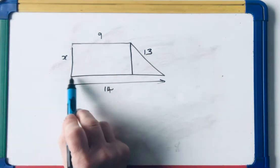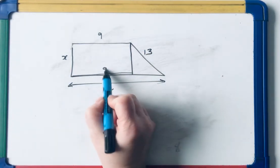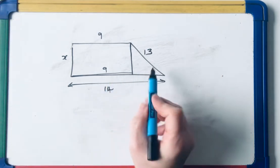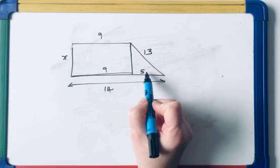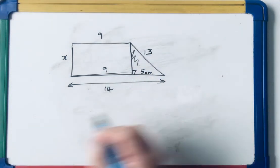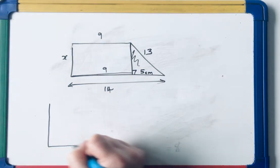So I split it into a rectangle and a triangle, like that. If that's 9, that's 9, because opposite sides of a rectangle are equal. And then this is 14 take away 9, is 5 centimeters. I'm going to pull out this right-angled triangle and apply Pythagoras' theorem.